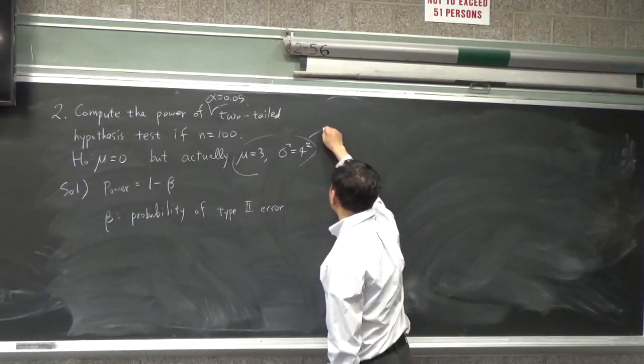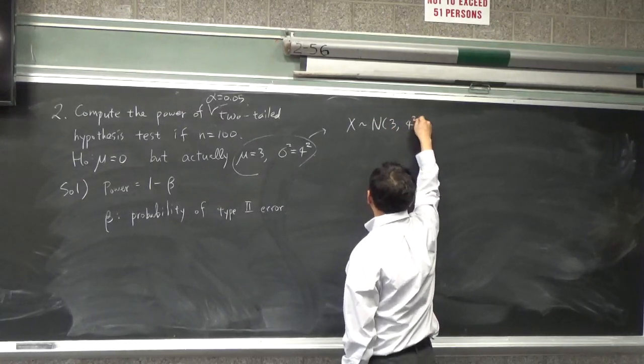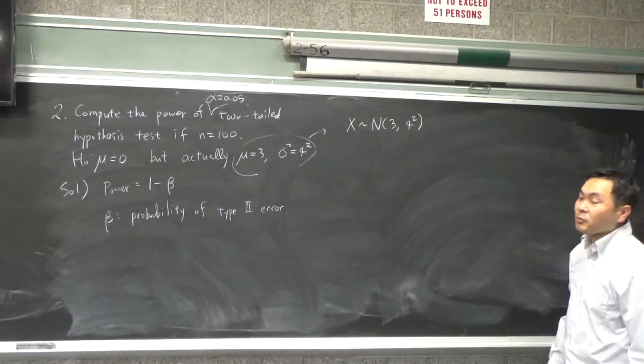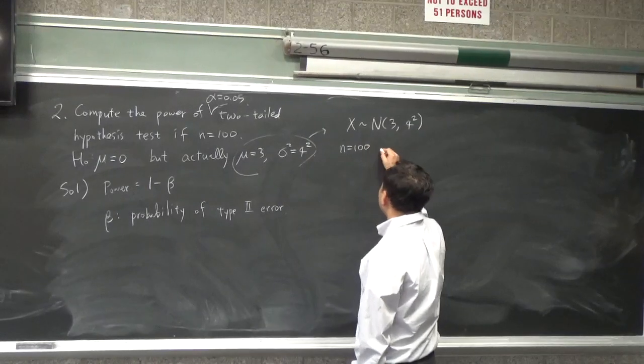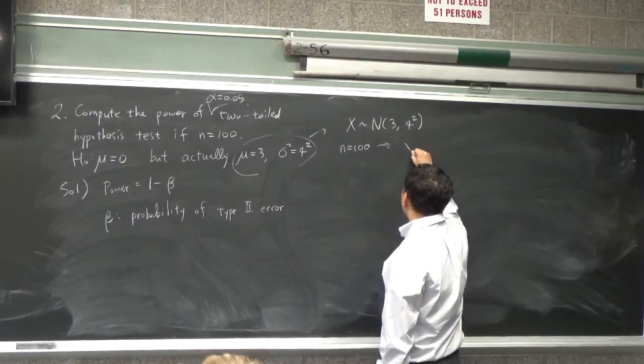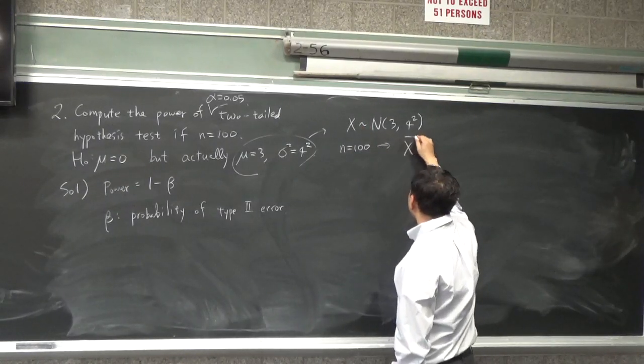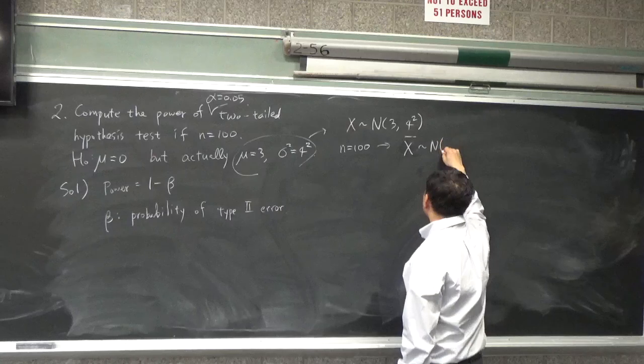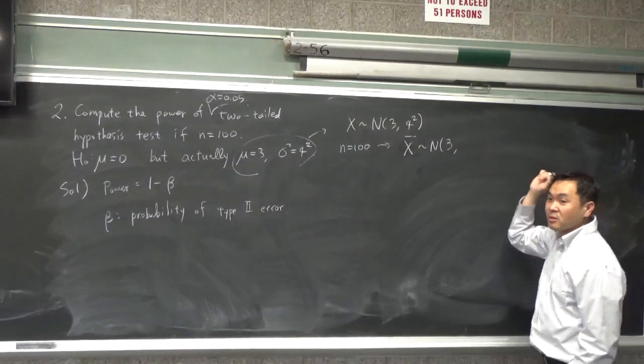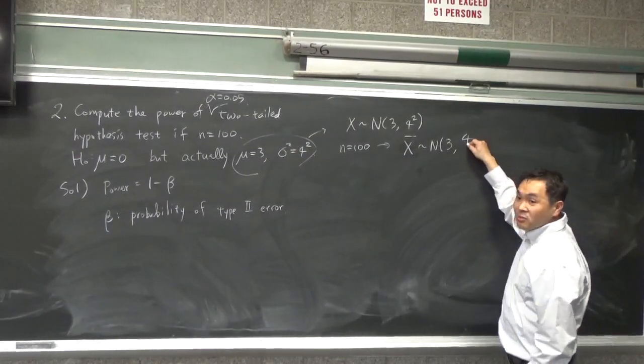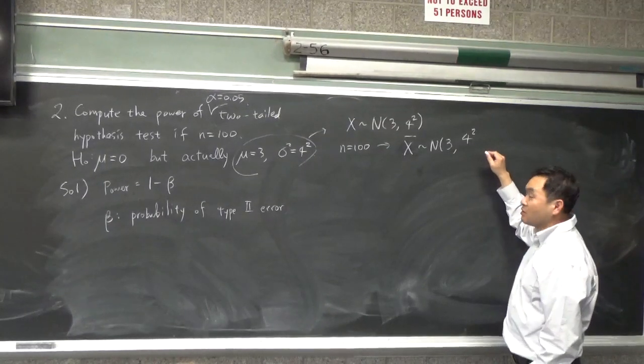This really says that our random variable follows the normal distribution with 3 and 4 squared. And if we have n equals to 100, then the average of 100 of these x's, which we call x bar, is going to follow the normal distribution with the same mean value. But what happens to the variance? The variance goes down, right? By how much? By 100.